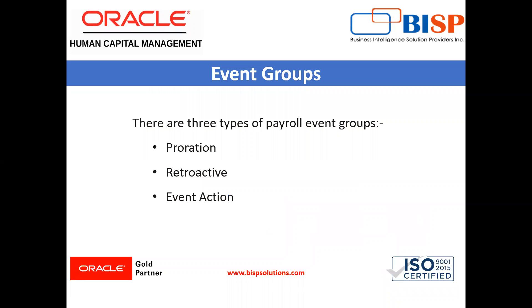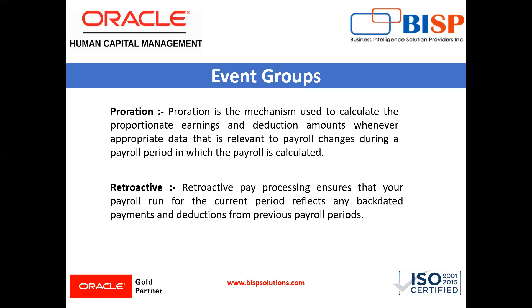There are three types of event groups: proration, retroactive, and event groups. Proration calculates the proportionate amount for a recurring element when payroll-relevant data changes during a particular payroll period. It is a mechanism used to calculate the proportionate earning and deduction amount when data relevant to payroll changes during a payroll period in which the payroll is calculated.